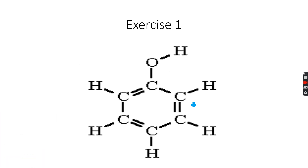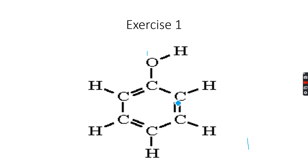Here we have the same benzene ring but with one H atom replaced by an OH group — this molecule is called phenol. We can note that the OH group will give one singlet peak on its own. You might think all the remaining carbon atoms are still equivalent, so the five hydrogen atoms contribute to the same proton environment — but that's wrong. Let me explain why.